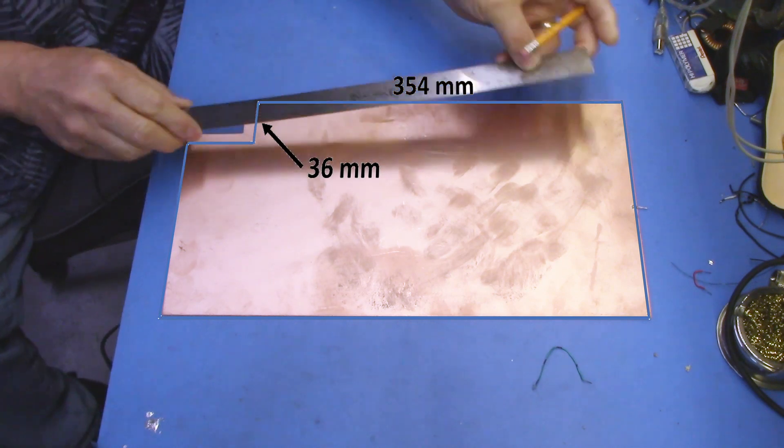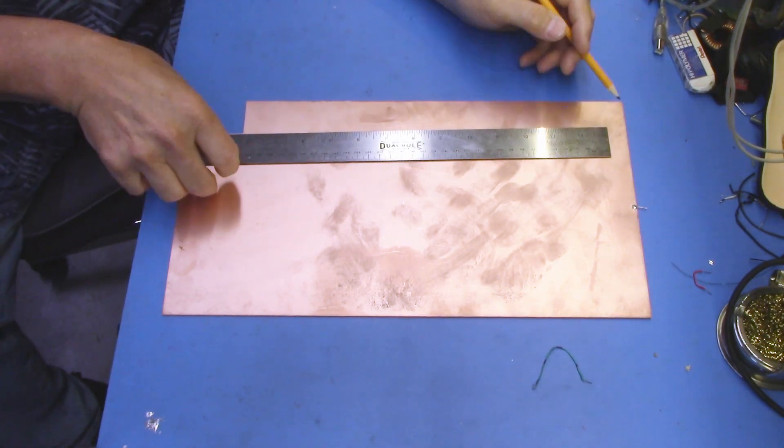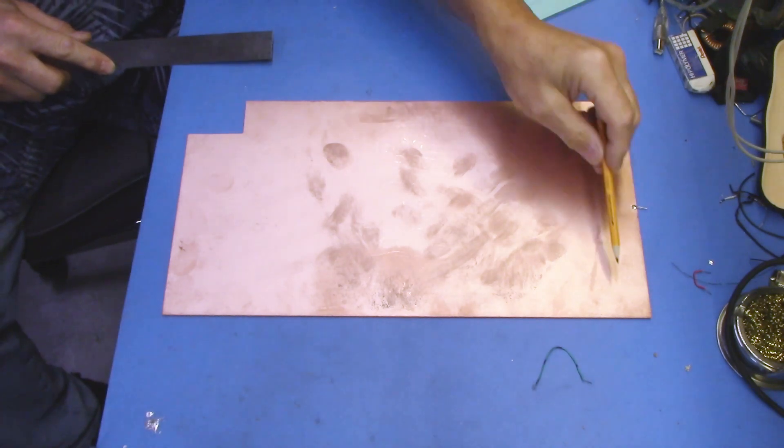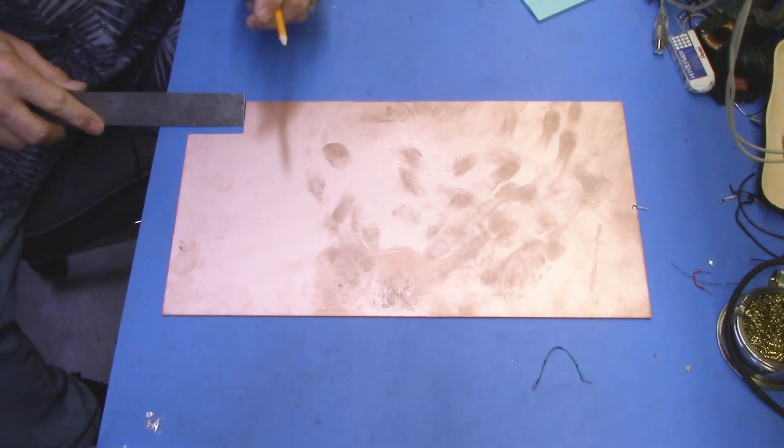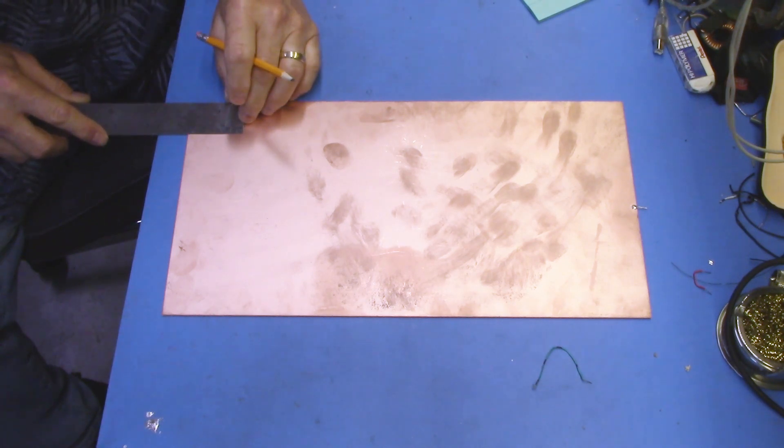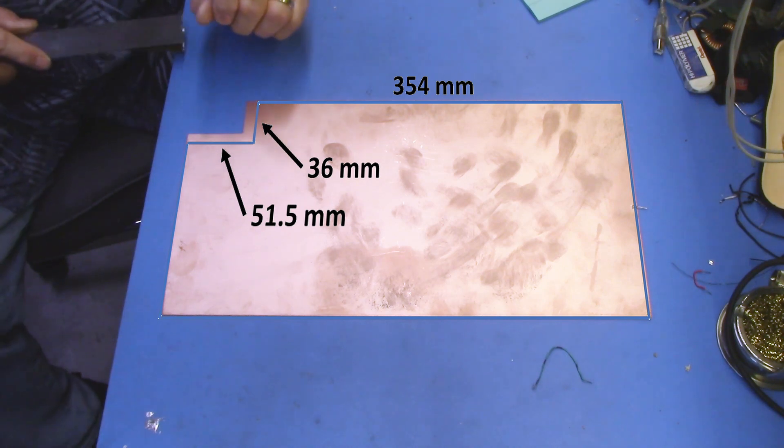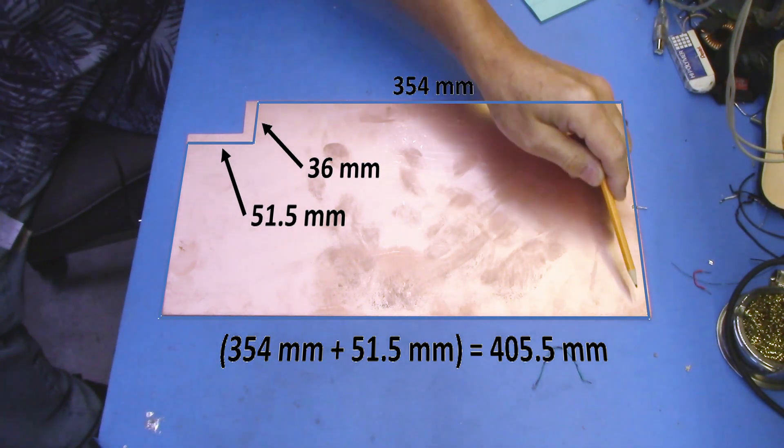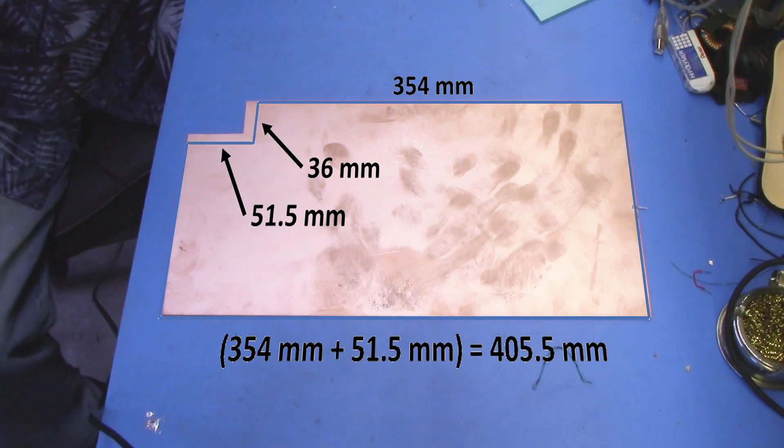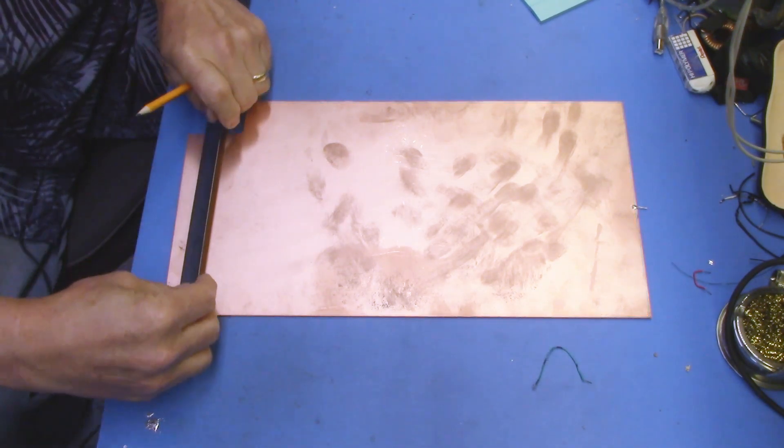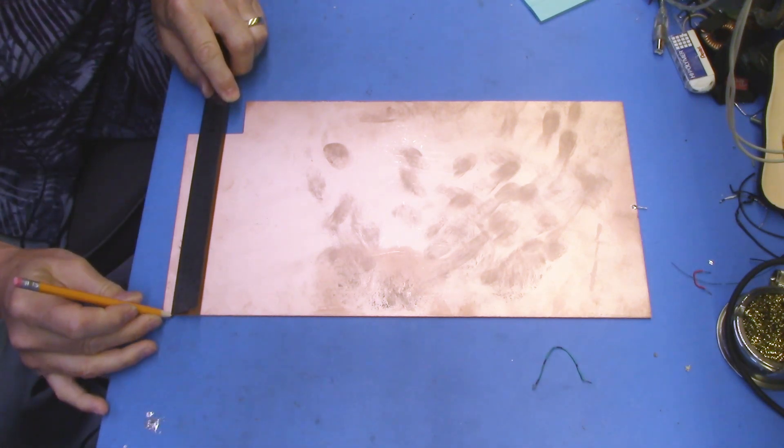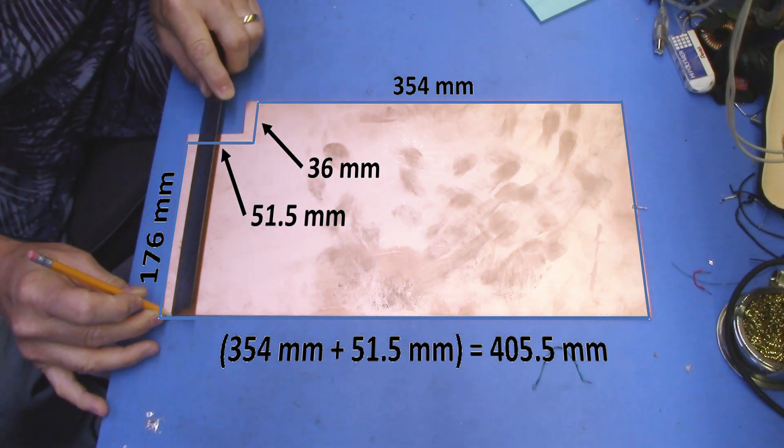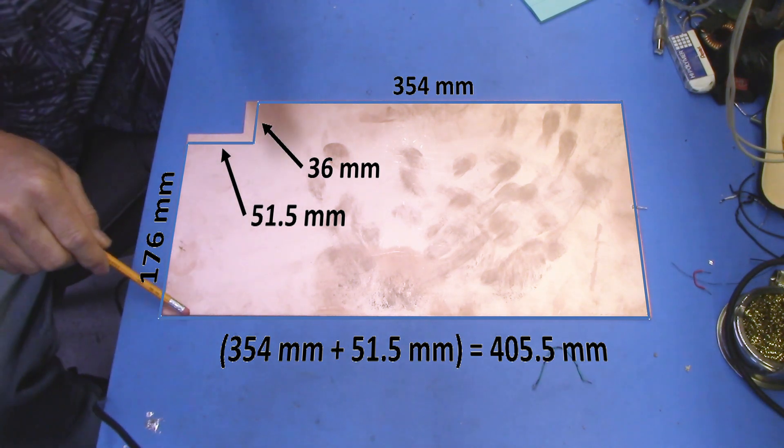Now my ruler isn't long enough to measure end to end. So what I'm going to do is I'm going to measure this distance here and add it to this distance to get the overall length of this section here. So in measuring this section right here very carefully it comes out to 51 and a half millimeters. So 51 and a half plus 354 gives me a total length of this side of 405.5. Now let's measure the size in this direction. Again we line everything up very carefully with the edge and this is 176 millimeters.